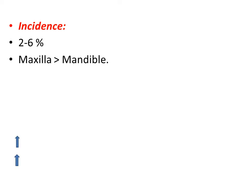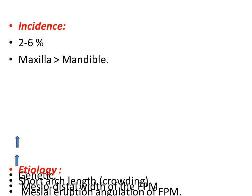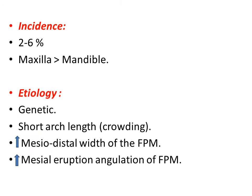Its incidence is just 2–6%. It is more common in the maxilla than in the mandible. The etiology of this malocclusion is genetic — one of the causes — as well as crowding or shortening of arch length.